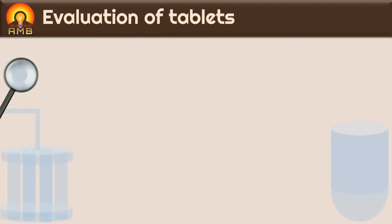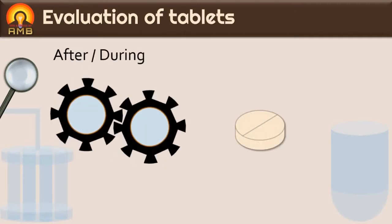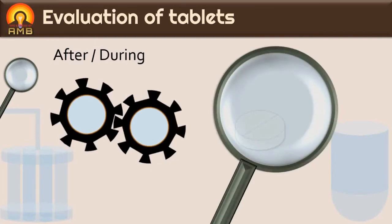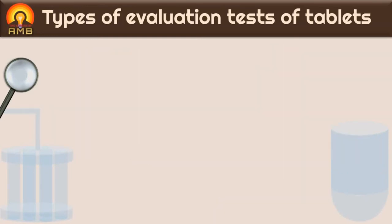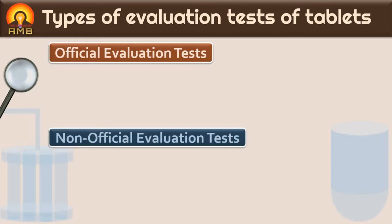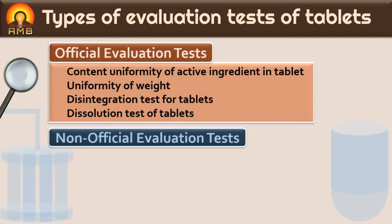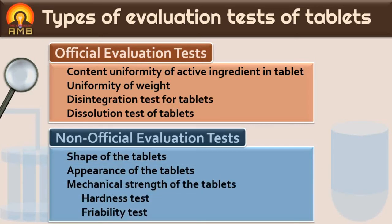Already, we discussed that after manufacturing or during manufacturing, tablets are evaluated for quality control tests to check and maintain quality of the tablets. We also discussed that there are two types of evaluation tests for tablets: official evaluation tests and non-official evaluation tests. Content uniformity of active ingredient, uniformity of weight, disintegration tests, and dissolution tests are official tests. Content uniformity, shape, appearance, mechanical strength, hardness tests, and friability tests are non-official tests.